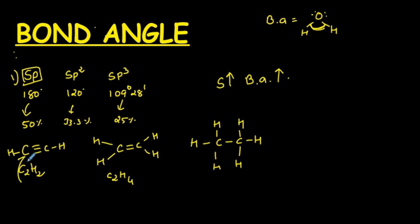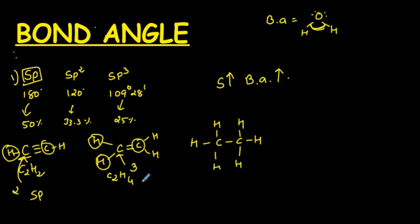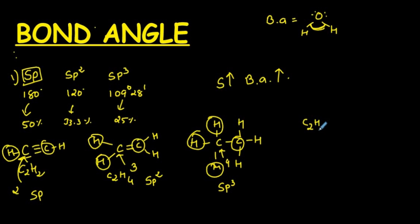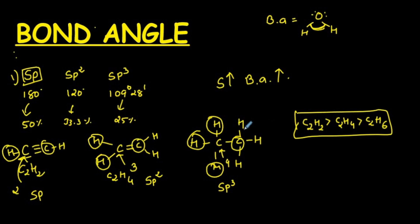Looking at this carbon in C2H2: it is attached to one hydrogen and one carbon with no lone pair, so the number of groups is two and hybridization is SP. For C2H4, the carbon is attached to three other elements with no lone pair, so hybridization is SP2. For C2H6, carbon is attached to four other elements with no lone pair, so hybridization is SP3.